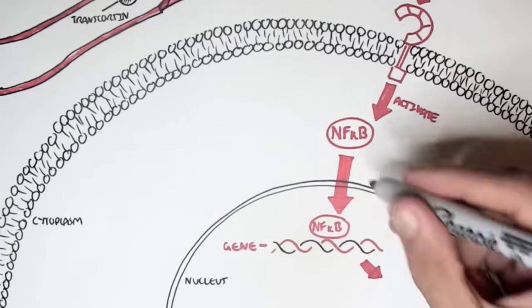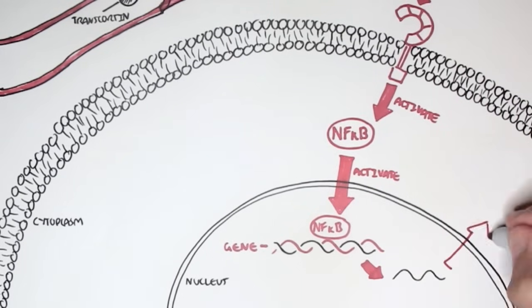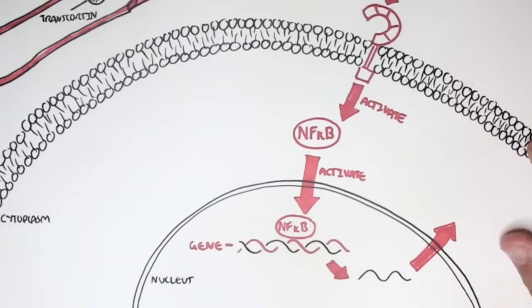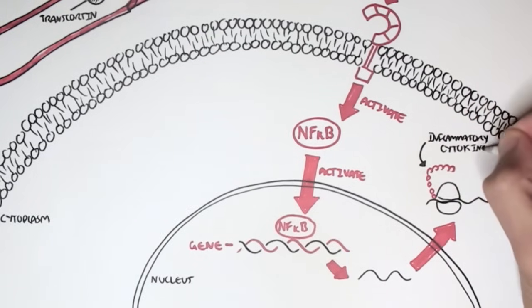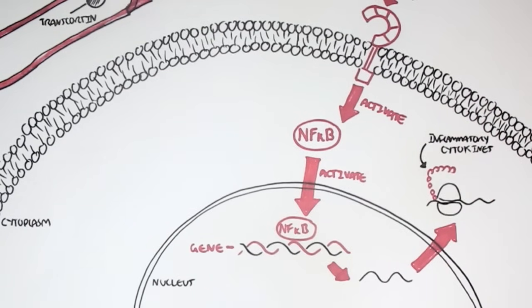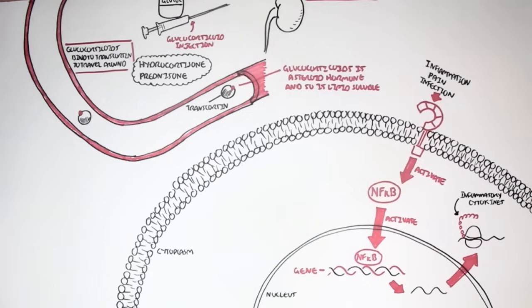Nucleofactor Kappa B will then activate the genes of this cell to produce mRNA. The mRNA will be translated to inflammatory cytokines or will be translated for inflammatory cytokines to stimulate or to promote the inflammatory response. And this may cause sensitization of pain, heat, redness, etc. So this will promote inflammation, the response.